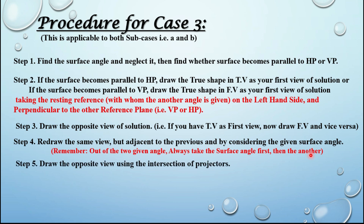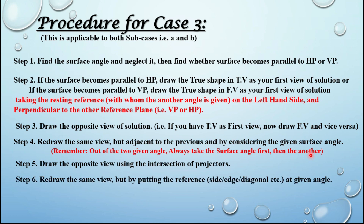Step five: draw the opposite view using the intersection of projectors. Step six: redraw the same view again but by putting the reference — that is the side edge, diagonal, etc. — at the particular given angle. Step seven: finally obtain the opposite view by intersection of projectors.